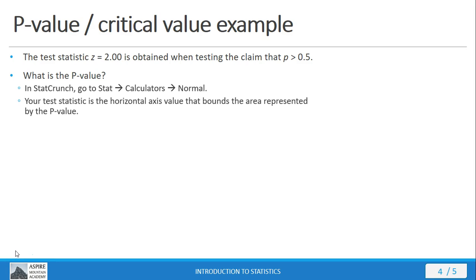So, the test statistic will be that boundary, okay, for the area that is the p-value. So, we put that in, we get the area in the tail of the distribution, and that's going to tell us what our p-value is.